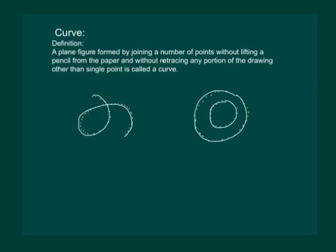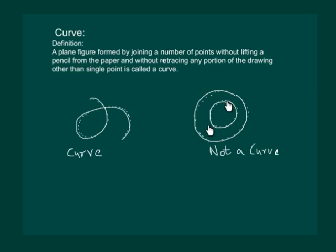No, it's not possible. I will have to pick up my pencil and then join. That means the second figure is not a curve. Basically it has two curves, one small circle and one big circle. Also we can see that in the first figure we are retracing just one point, while in the second figure we are retracing two points, firstly this one and secondly this one, since we started from here. So, according to the definition, the curve can only trace a single point. So this figure is a curve, but this figure is not a curve.